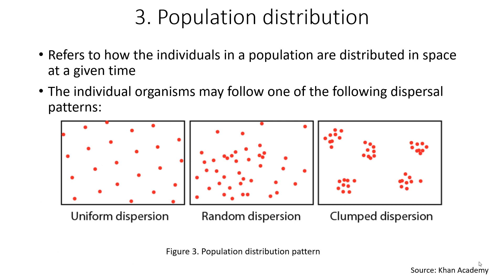Population distribution refers to how the individuals in a population are distributed in space at a given time. Individuals may follow one of the following dispersal patterns. First, uniform dispersion: individuals of a population are spaced more or less evenly. For example, plants that secrete toxins to inhibit growth of nearby individuals can exhibit uniform dispersion. Uniform dispersion can also be found in animal species where individuals mark out and defend territories.